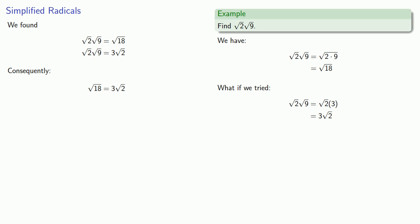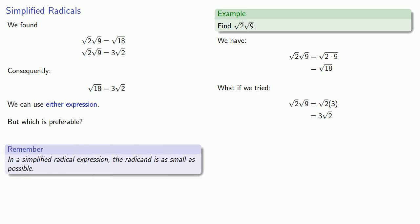Now, because they're equal, we can use either expression — but which is preferable? It really depends on the situation. But as a general rule, in a simplified radical expression, the radicand is as small as possible. In this expression we have radicand 18; in the other expression we have radicand 2. So the expression on the right, 3 square root of 2, is the preferred simplification.